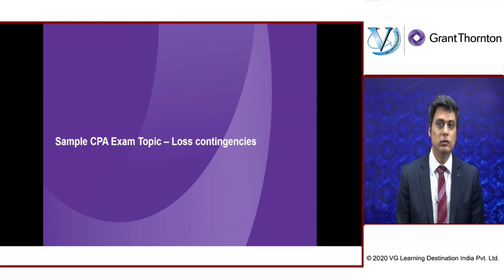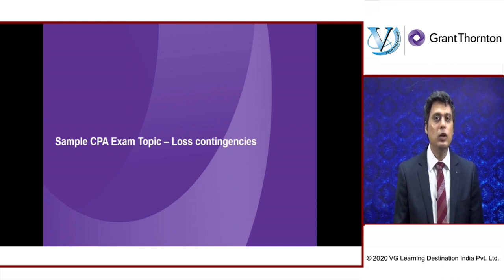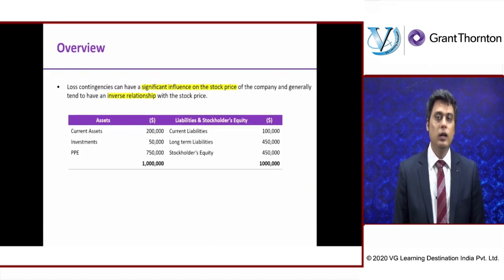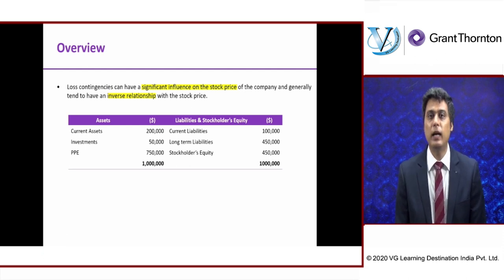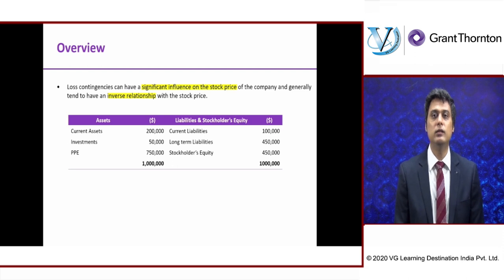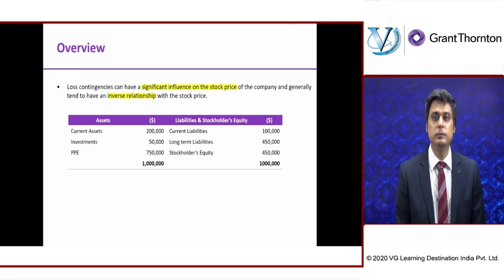Now let me spend two minutes explaining why this is a very important number in the financial statements. Believe it or not, loss contingencies can potentially influence the stock price of the company. They tend to have an inverse relationship: if your contingent liabilities or loss contingencies keep growing, the stock price of your company will start declining. There are reports and research data available on this — you can also Google search it.